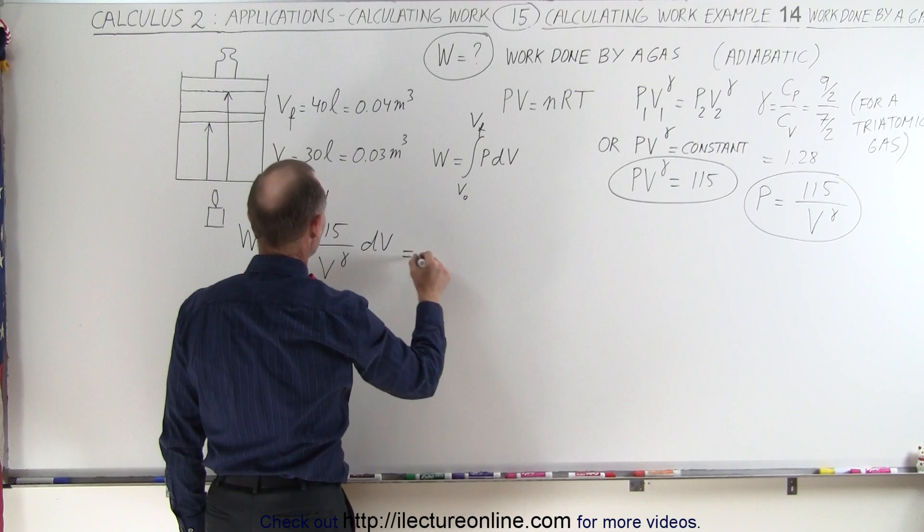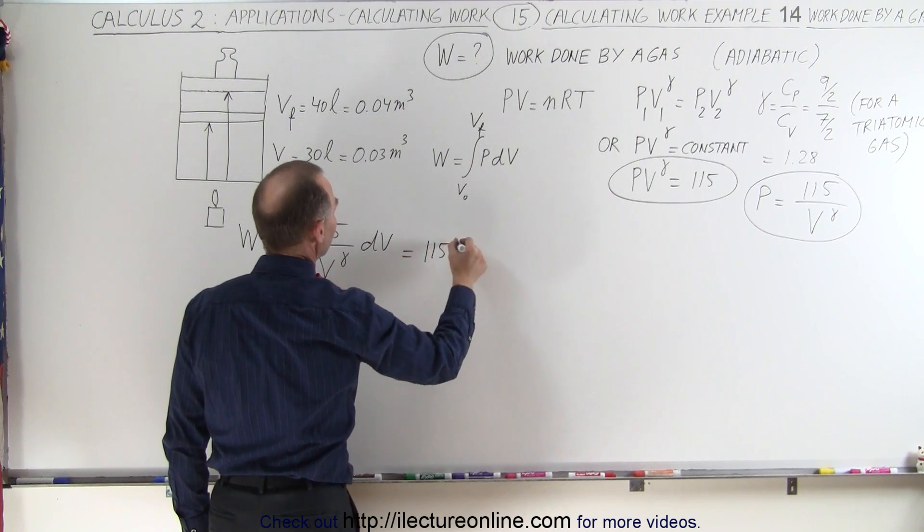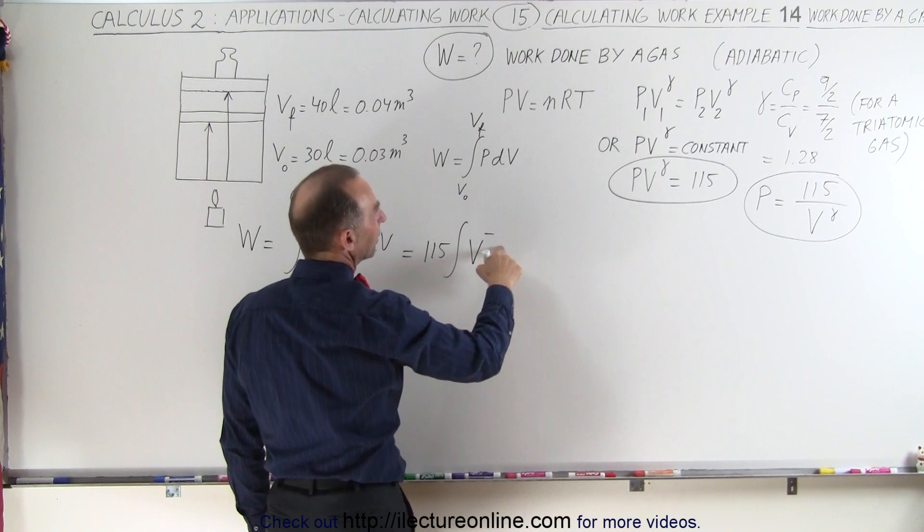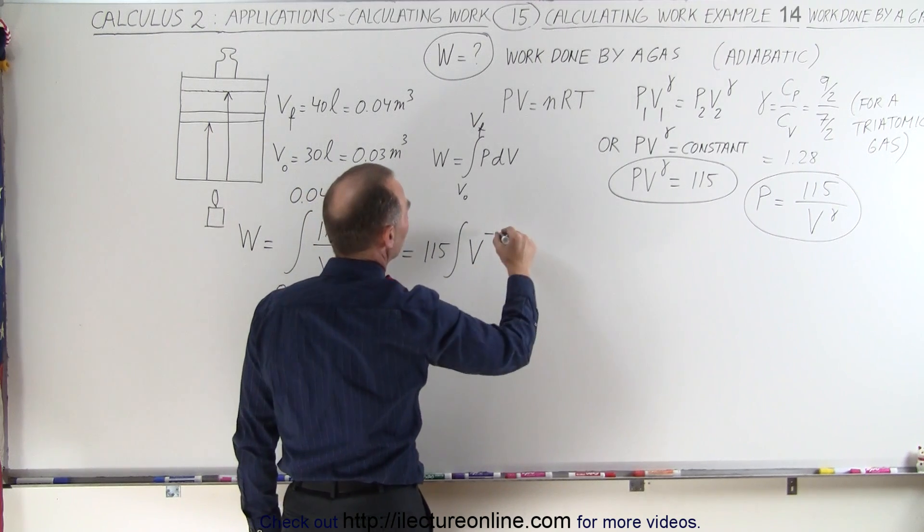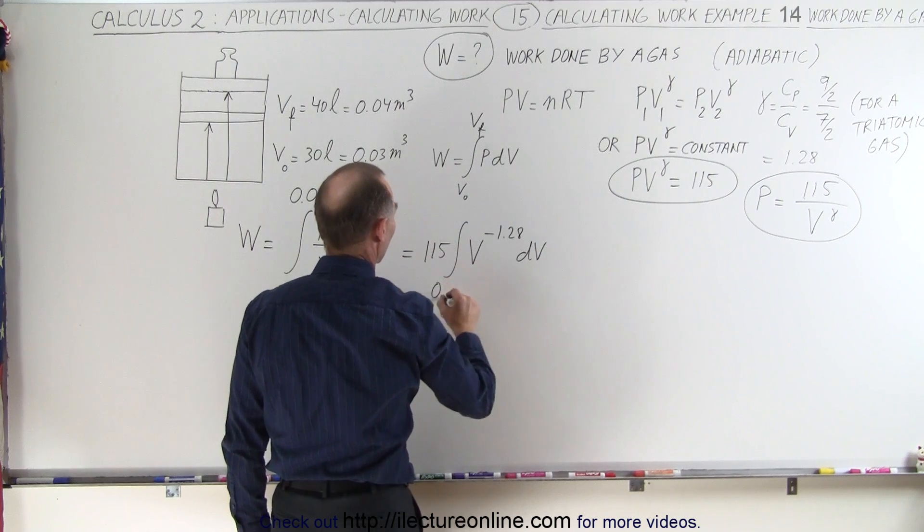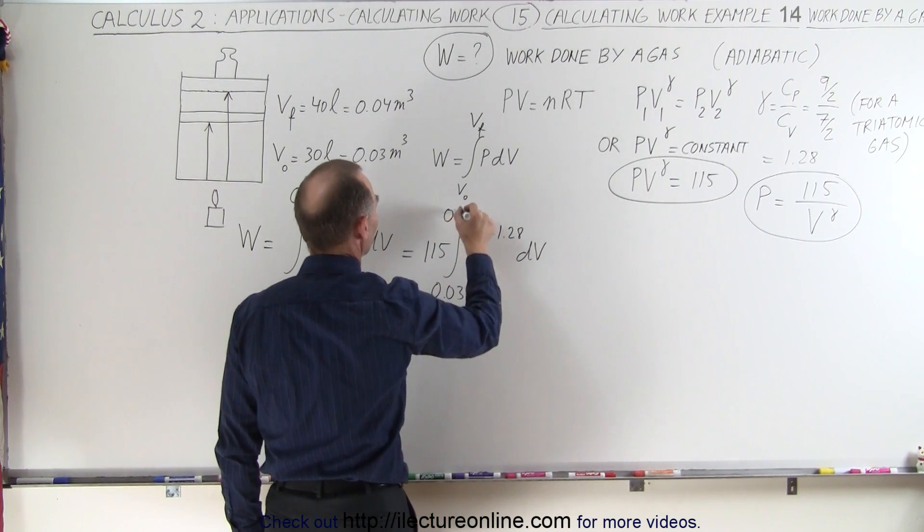This is equal to 115 times the integral of v to the negative gamma. Gamma in our case was going to be 1.28 times dv from 0.03 to 0.04.